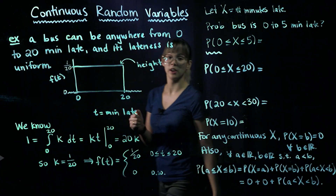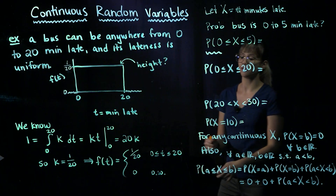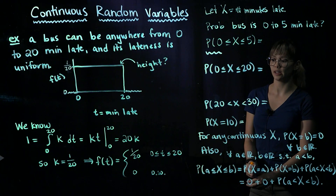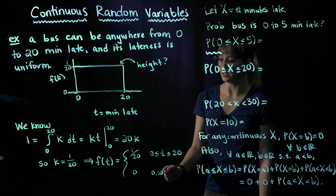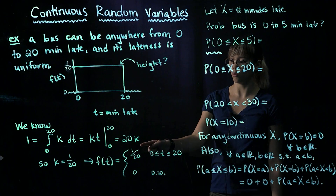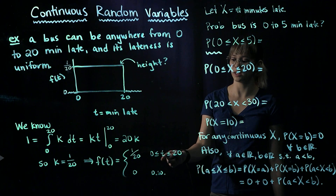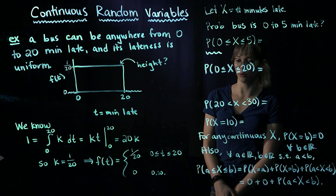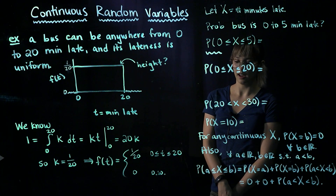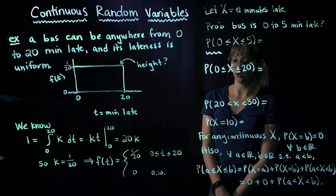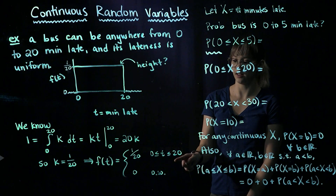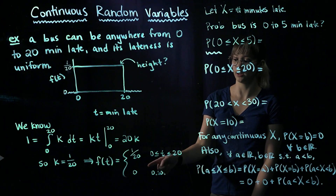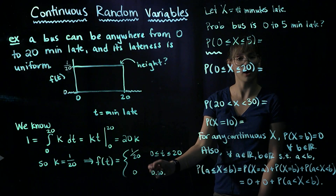Now we can write down our PDF: f(t) equals 1/20 when t is between 0 and 20, and 0 otherwise.